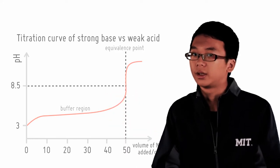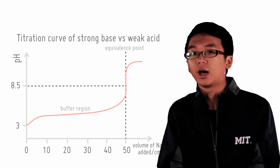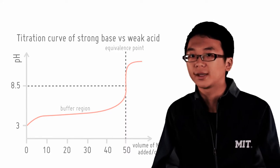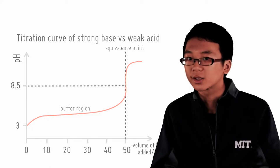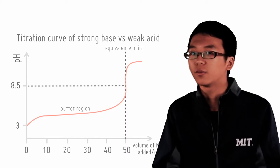The graph to the left of the equivalence point has such a shape because it is actually a buffer. Again, the salt formed between a strong base and a weak acid forms a conjugate base salt that will want to reform the weak acid by reacting with water.